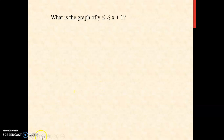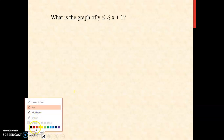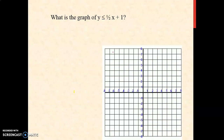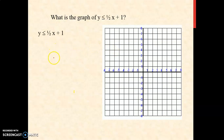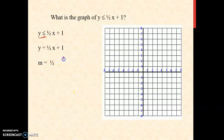The second example: y is less than or equal to one-half x plus 1. Again, we're going to change the inequality symbol to an equal sign. Now we have y equals one-half x plus 1. We're going to determine your slope. Your slope is the coefficient of x, which is one-half, meaning 1 rise over 2 run. Since the slope is positive, it is expected that the line rises to the right. Your y-intercept is 1.